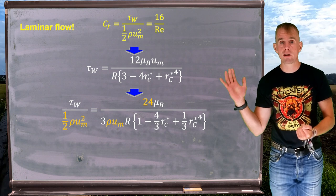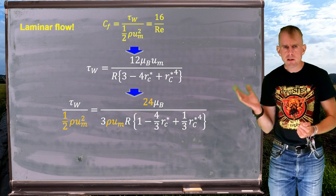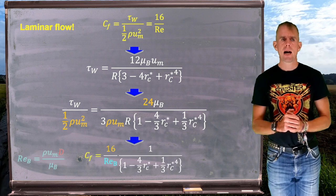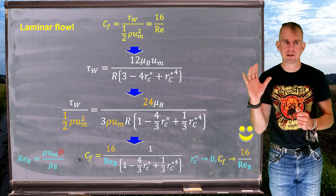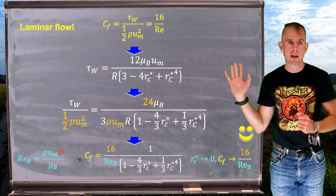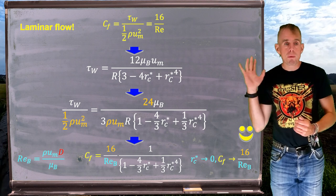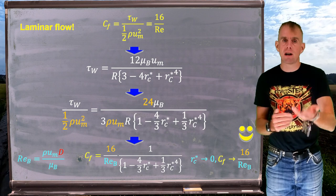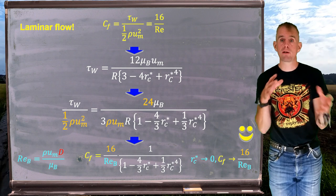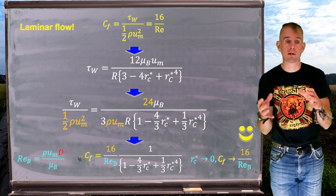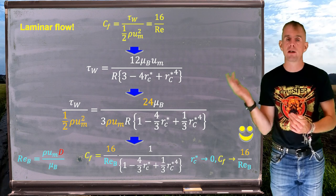On the left-hand side, my expression for friction factor: τ_w over one-half ρu_m². On the right-hand side, the expression for what that equals in a Bingham fluid. After some tidying and rearranging, we can see that a Bingham Reynolds number exists — it's ρu_m D over Bingham viscosity μ_B — and the result involves 16 over Bingham Reynolds number multiplied by a term involving core radius, which relates to yield stress.